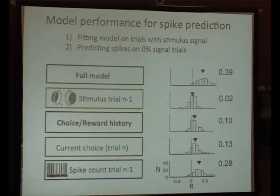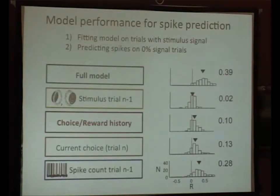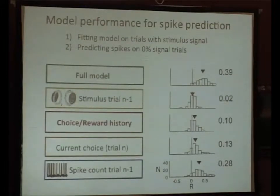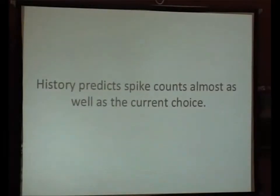In response to a question: the previous spike count was included to allow for the possibility of sensory adaptation — if there's a very strong stimulus, the response might adapt. The weight of the previous spike count is indeed negative, as we would expect from adaptation. And choice and reward history predicts the spike counts almost as well as the current choice predicts the spike count.